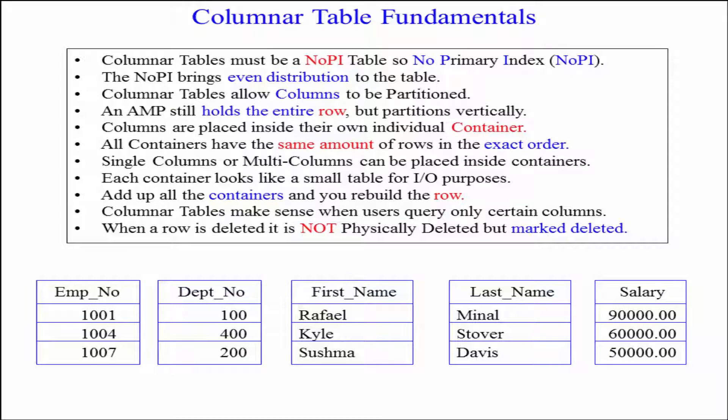Remember, here are the fundamentals. Columnar tables must be a no PI table, so no primary index. The no PI brings even distribution to the table. Columnar tables allow columns to be partitioned.